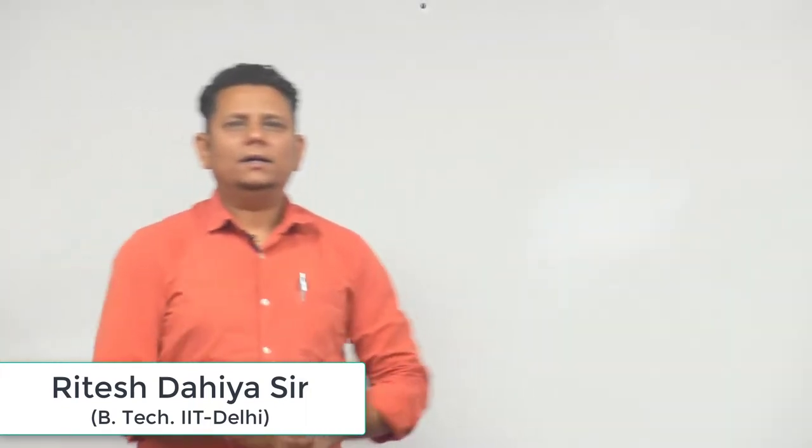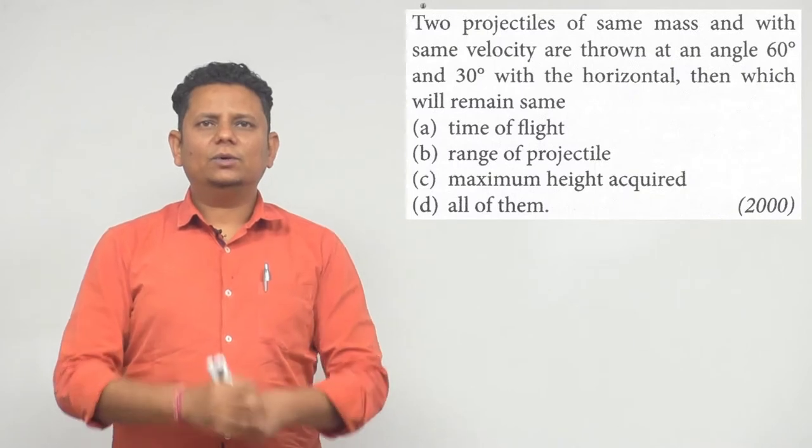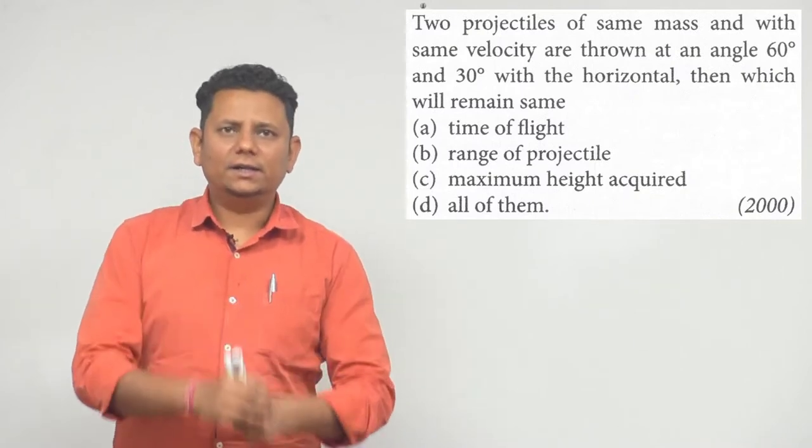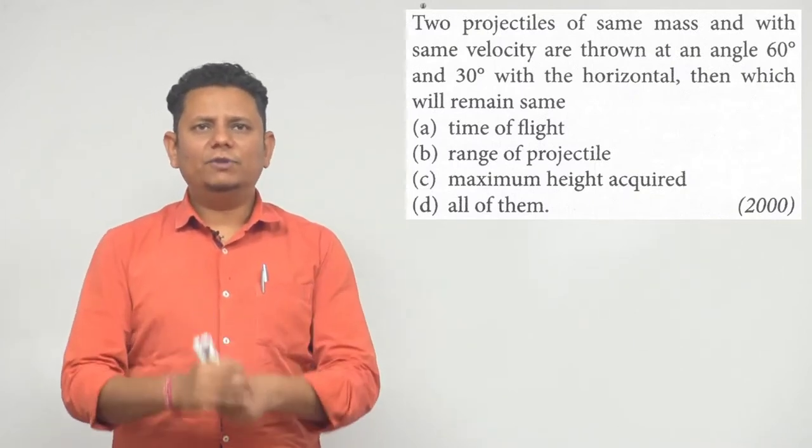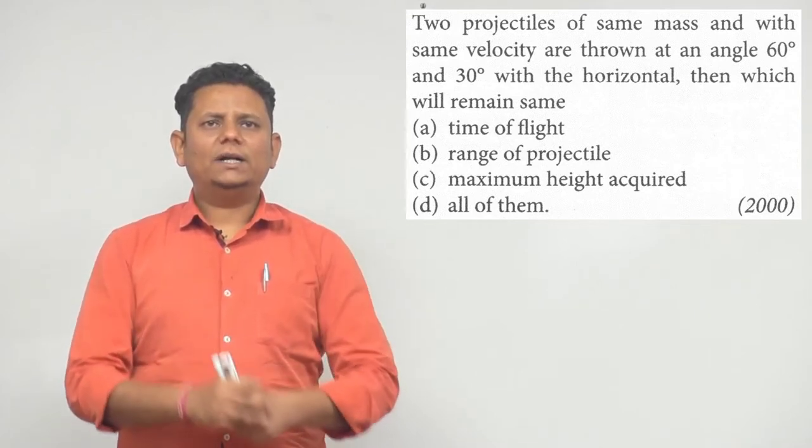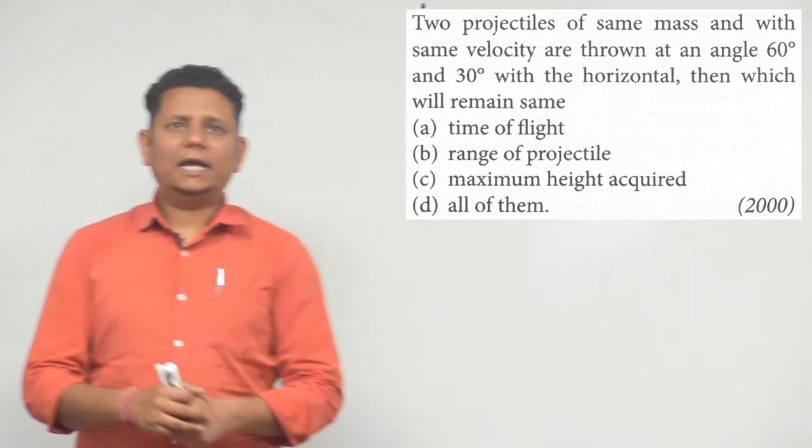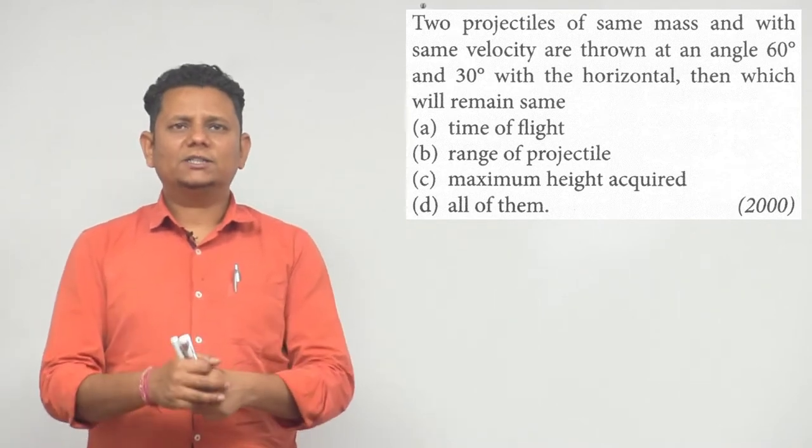Next question: two projectiles of same mass with same velocity are thrown at an angle of 60 degrees and 30 degrees with the horizontal, then which quantity will remain the same? First, time of flight; second, range of flight; maximum height acquired; fourth option, all of them.